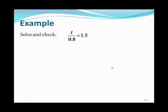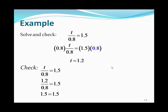t divided by 0.8 is equal to 1.5. This is a division equation, so we multiply both sides by 0.8. The left-hand side becomes just t, and 1.5 times 0.8 equals 1.2, giving a potential solution of t equals 1.2. Substituting back into the original equation confirms we get 1.5, so t equals 1.2 is correct.